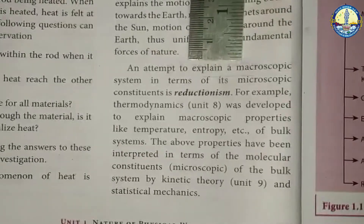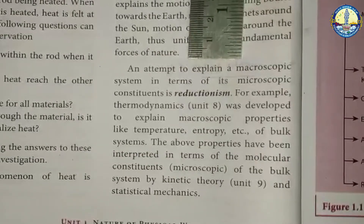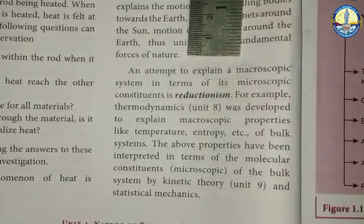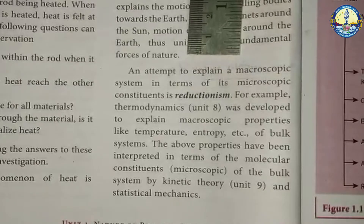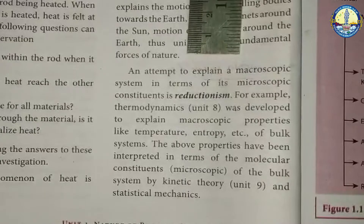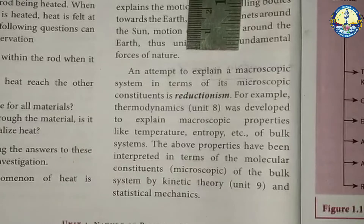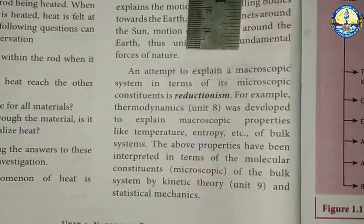For example, in thermodynamics, macroscopic properties such as temperature, entropy, and bulk properties of a system can be understood through molecular-level descriptions using statistical mechanics. This is the concept of reductionism in physics.